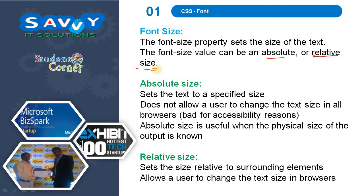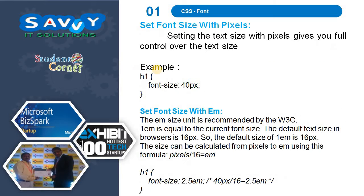Similarly, in relative size, you set the size relative to the surrounding element, and it allows a user to change the text size in browsers. To set the size with pixels gives you full control over the text size. For example, font-size: 40px.